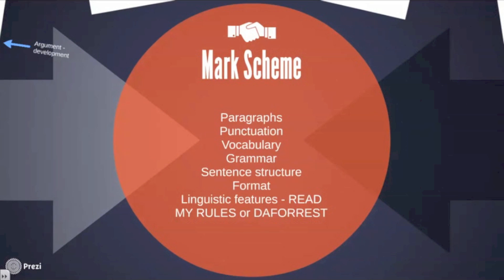You're marked on whether you can paragraph correctly, using paragraphs of different lengths. You need to use a variety of different punctuation — we always say at least five different types within your writing. Making sure your vocabulary is interesting, your grammar is spot on, and your sentence structure is varied, so lots of simple, compound and complex sentences. Also switch your subordinate clause from the beginning to the end of your sentence, and make sure sentence openings are varied — using prepositional phrases, verbs, or subordinating conjunctions.